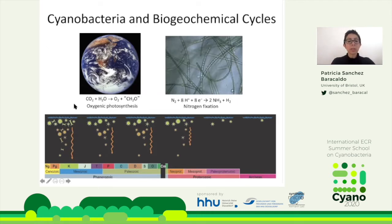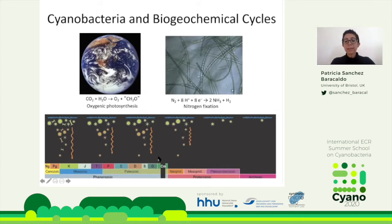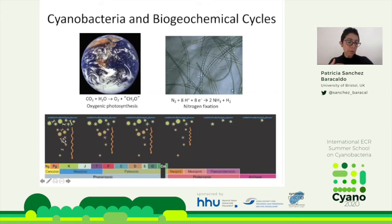Here I have a diagram showing how primary productivity has changed through geological time, with past on the right and present on the left, and the geological time periods shown. In the last 500 million years it's much easier to see how primary producers have changed through time, because some of them fossilize well — like diatoms and dinoflagellates. But this is much harder to understand for the early part of Earth history, which is when cyanobacteria evolved.